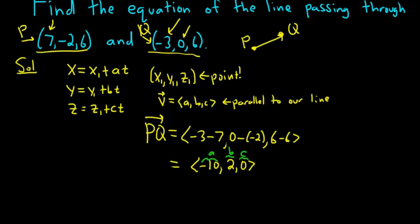Apologies about my voice. It's coming back. I lost it a few days ago. So x is equal to, let's see. Let's take this as our x1, y1, z1. It doesn't matter which one we take. We'll just take the first one. So it'll be 7 minus 10t.